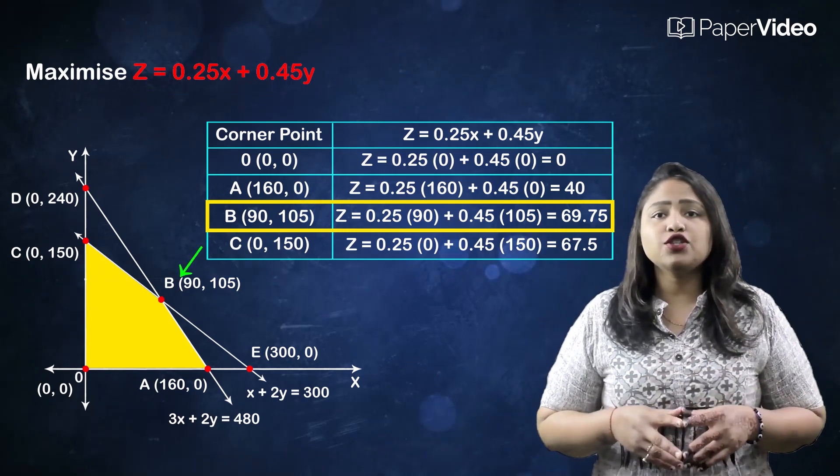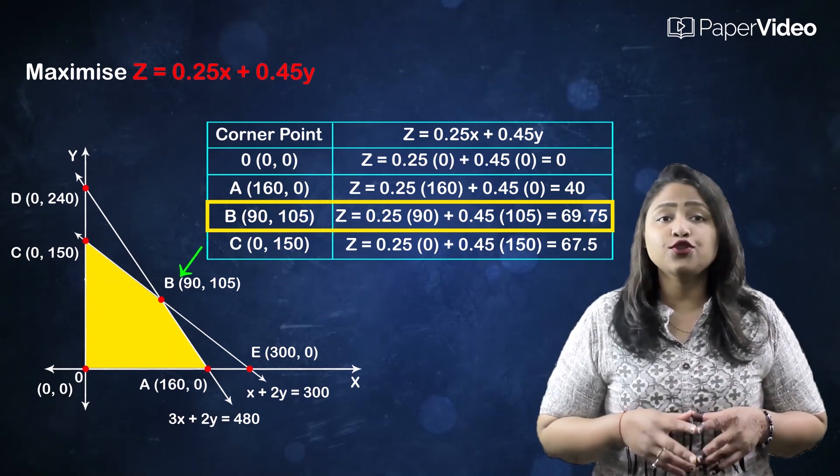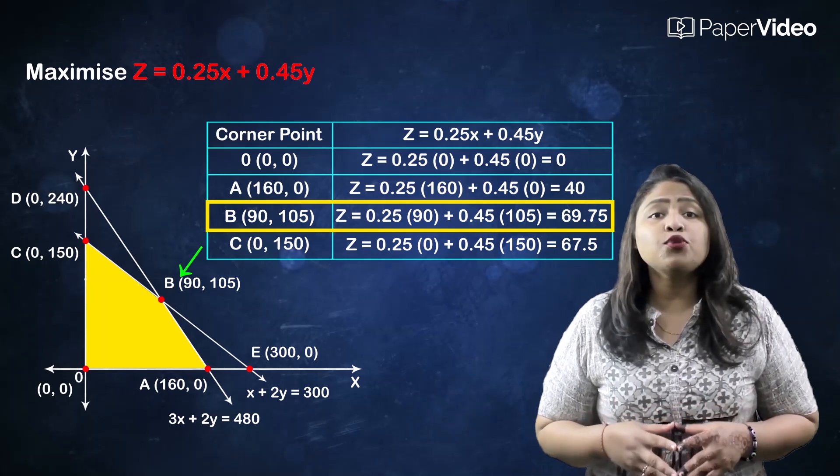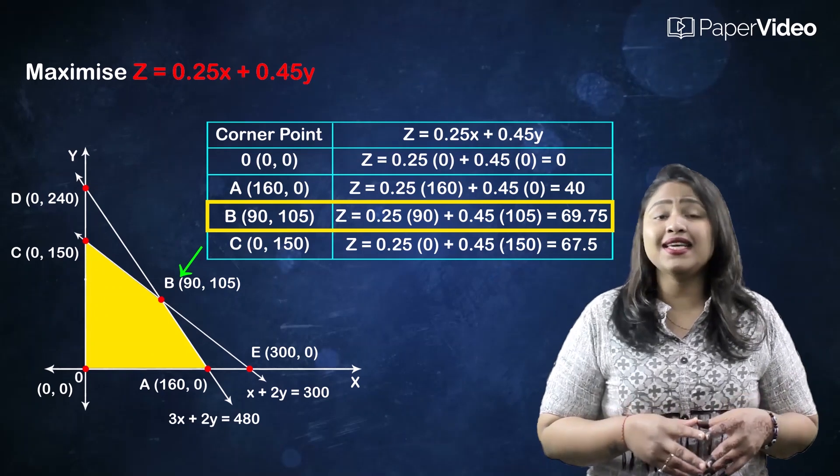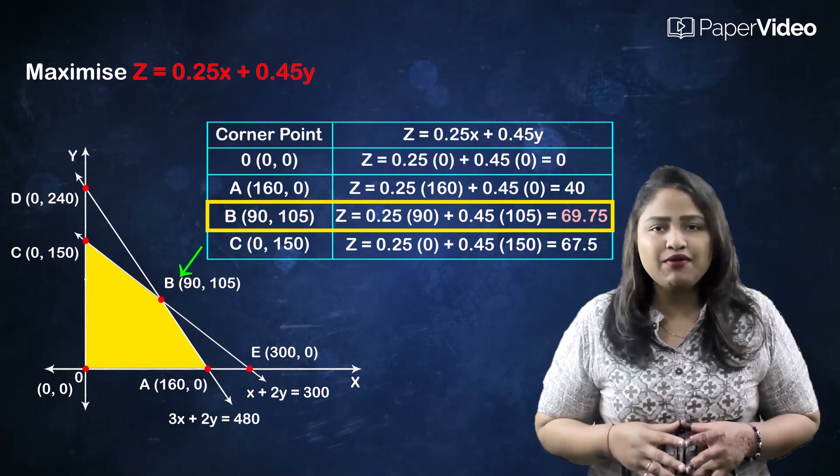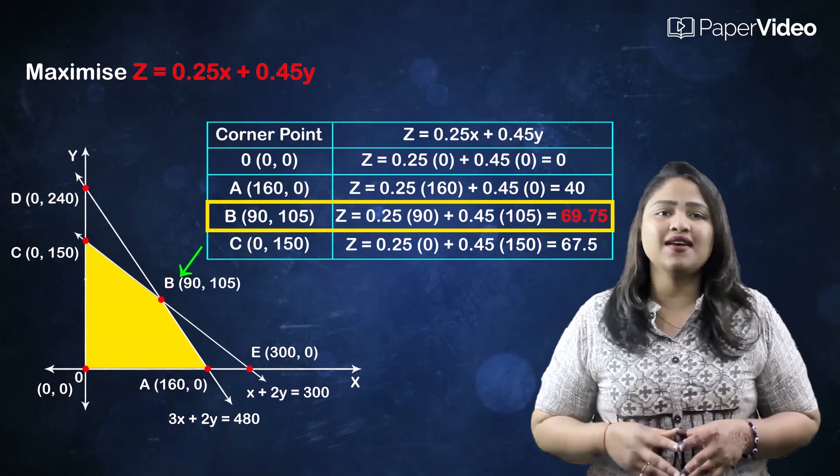Therefore, the objective function z = 0.25x + 0.45y is maximum at point B(90, 105) with maximum value 69.75.